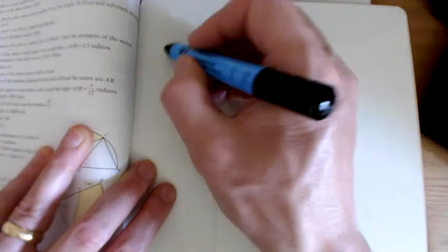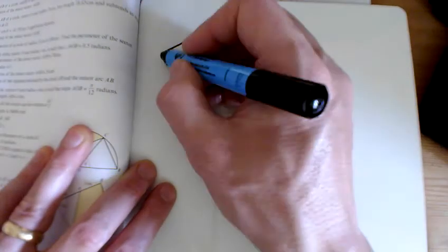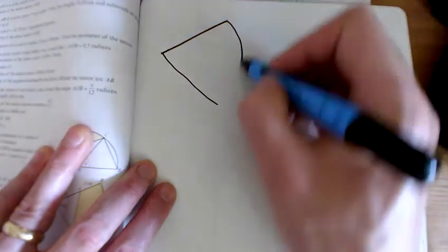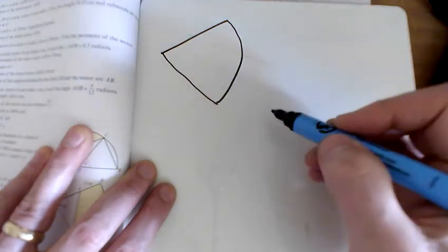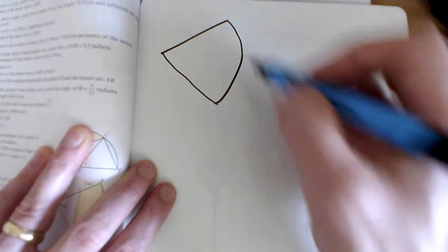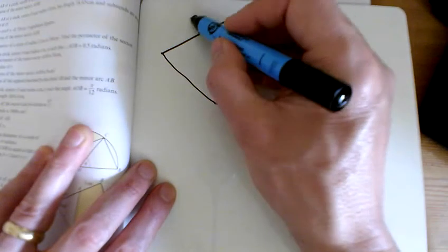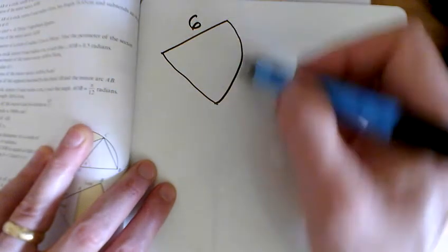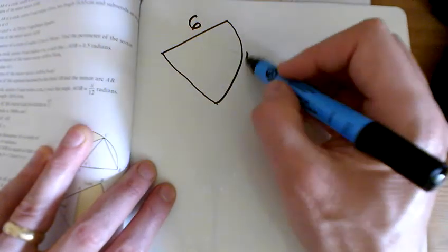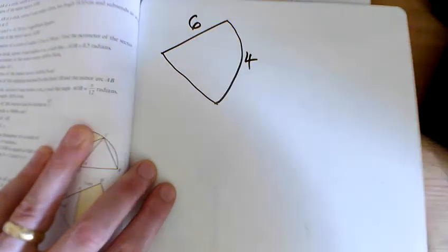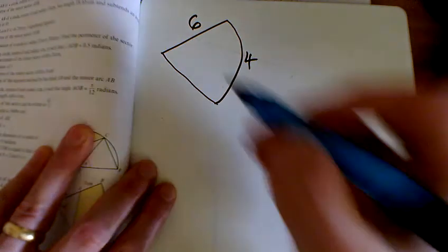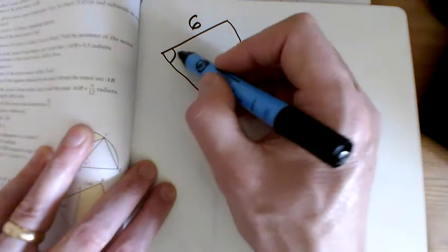Question 4. We have a sector and we've been told that it's got a radius of 6 and the arc length is 4 — excuse the scale.